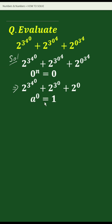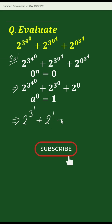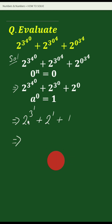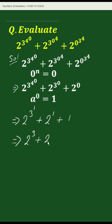We also know that a to the power 0 equals 1, so we can write this expression as 2 to the power 3 to the power 1, plus 2 to the power 1, plus 1. Now 3 to the power 1 equals 3, so this becomes 2 to the power 3, plus 2, plus 1. Since 2 to the power 3 equals 8, this gives us 8 plus 2 plus 1, which equals 11. This is your solution.